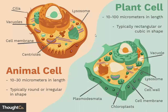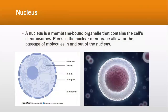If we look at the individual functions of those organelles, then we take a quick overview. For example, a nucleus is a membrane-bound organelle that contains the cell's chromosomes, and there are pores in the nuclear membrane that allow for the passage of molecules in and out of the nucleus.